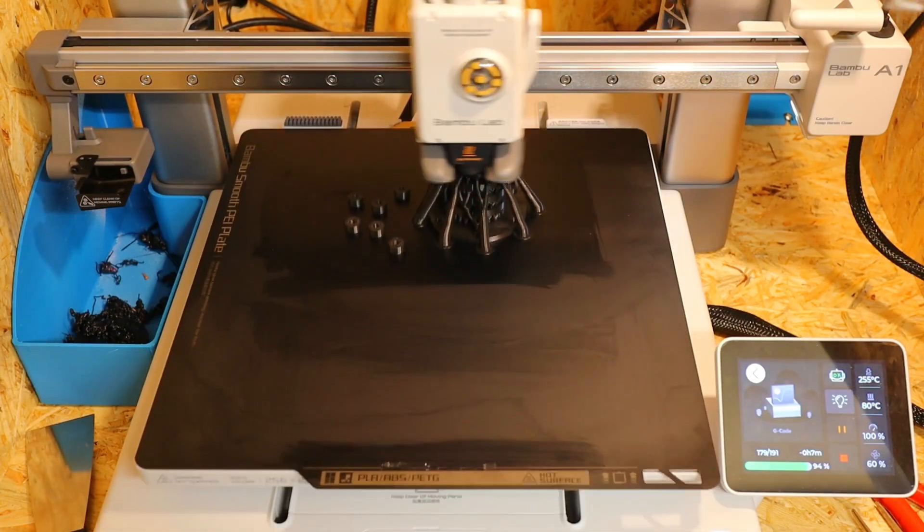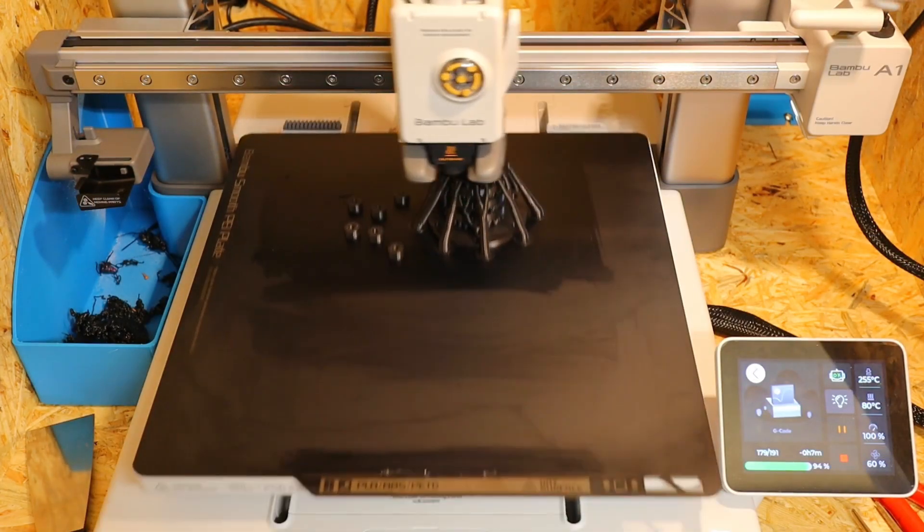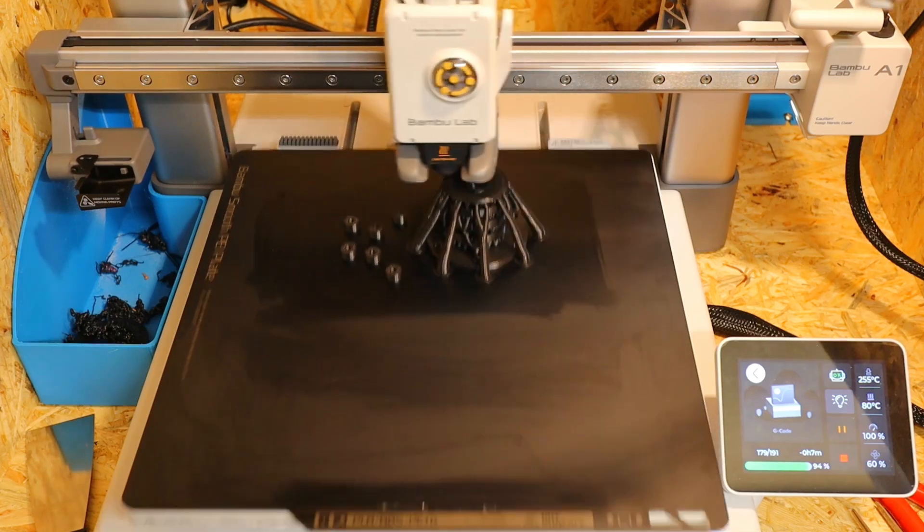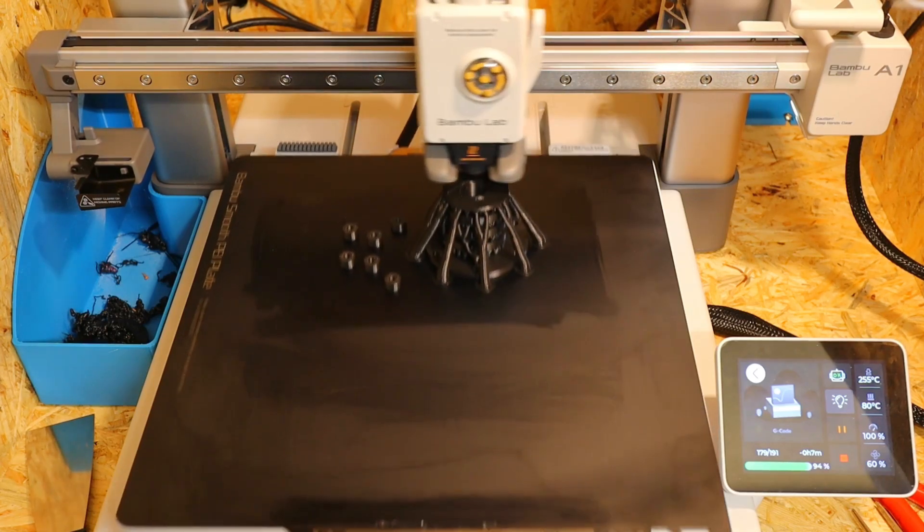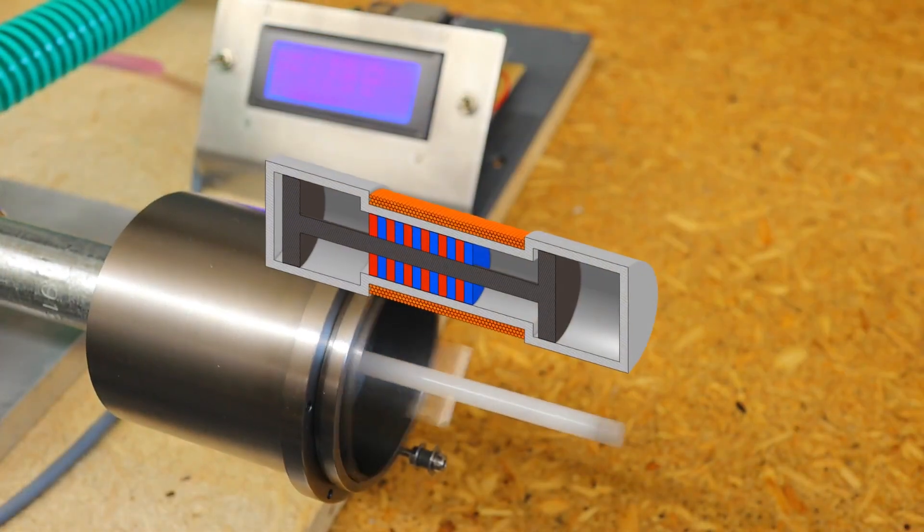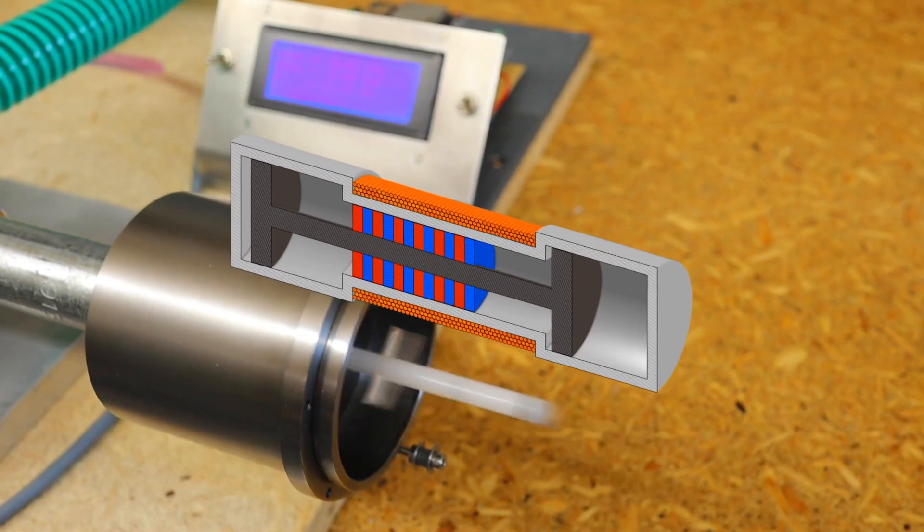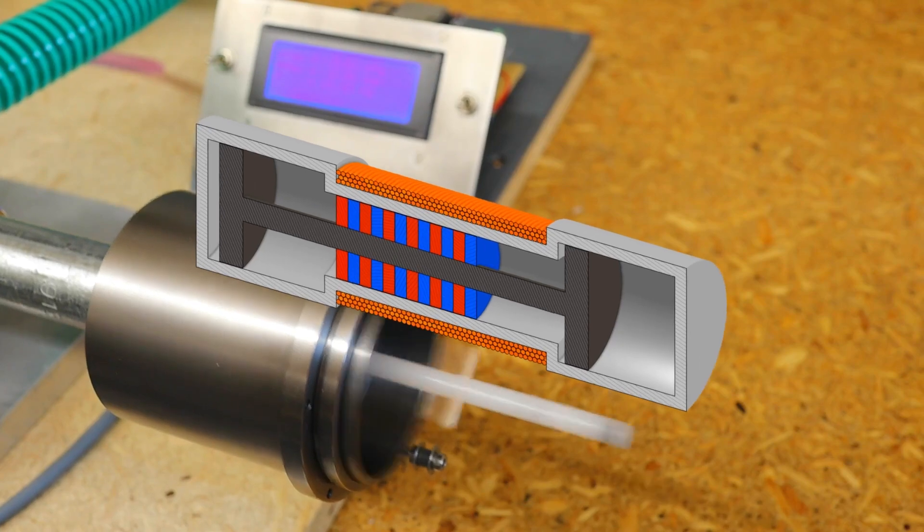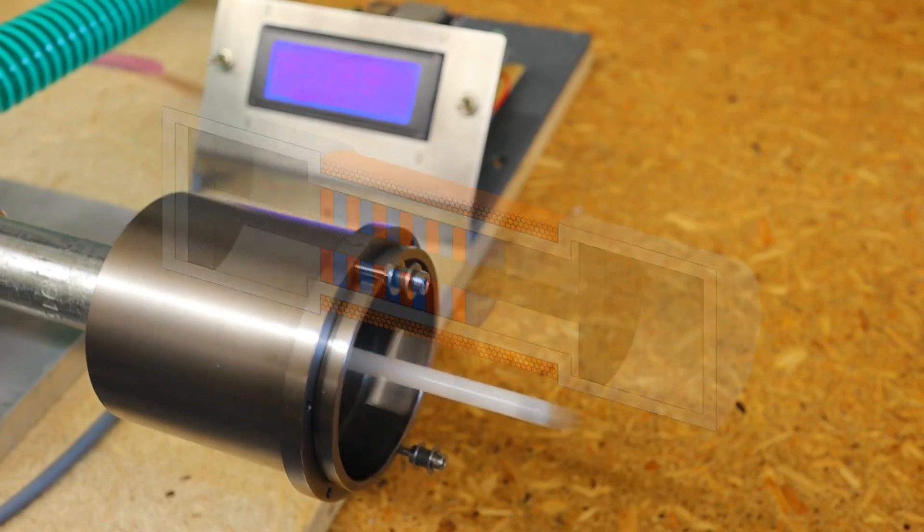As I want to make the whole thermoacoustic Stirling engine as easy to rebuild as possible, the linear generator will also be produced mainly with a 3D printer. The basic concept of a linear generator is very elegant, but if higher performance and efficiency are possible by relatively simple means remains to be seen.